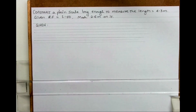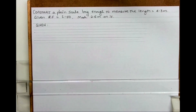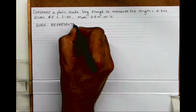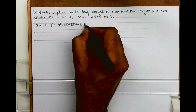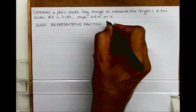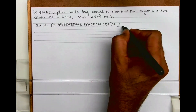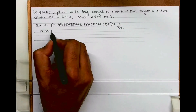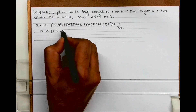Welcome to technical drawing. Today we will see a plane scale problem. We need to construct a plane scale long enough to measure up to 4.3 meters, given RF is 1 upon 50, and then mark 2.6 meters on it. First we will write the given data: the representative fraction is 1 is to 50. The maximum length is 4.3 meters.